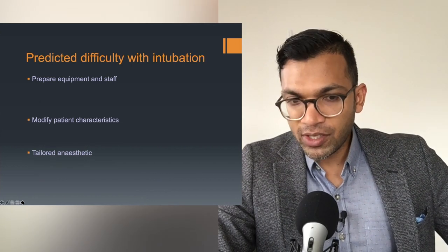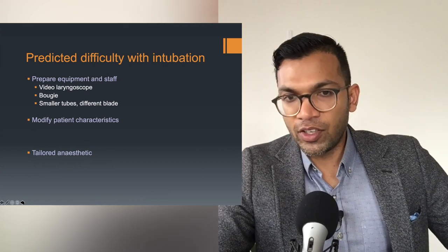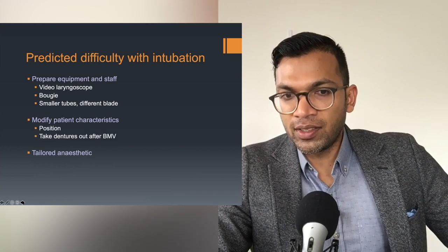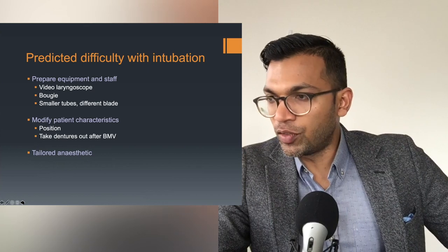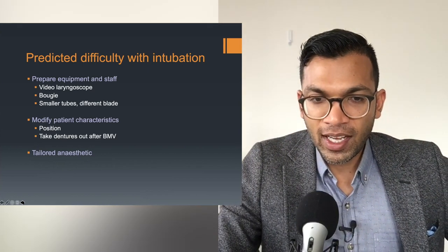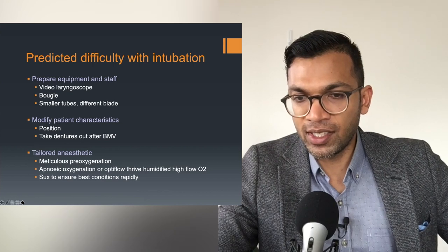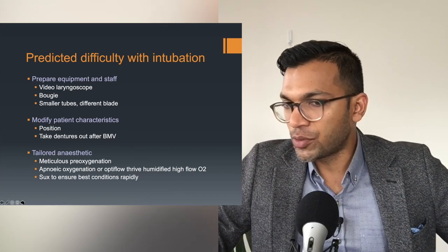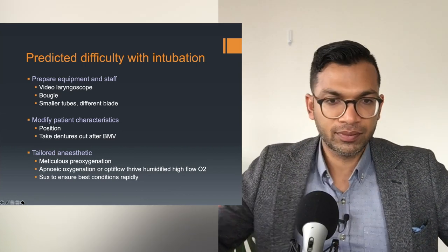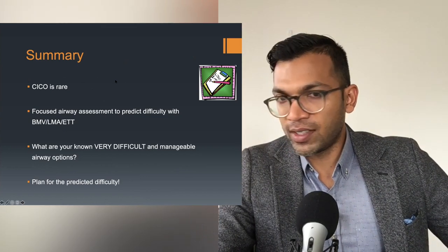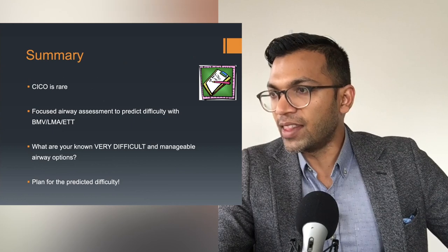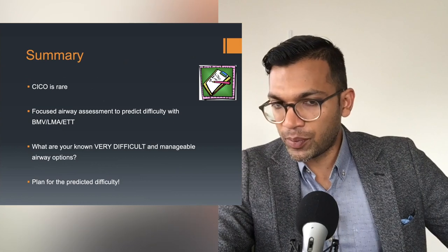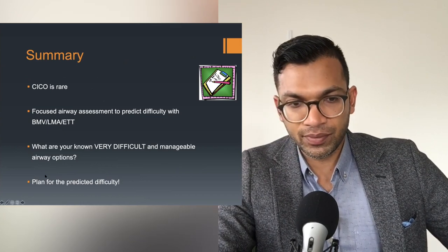For a difficult intubation: get everything ready — videolaryngoscope, bougie, smaller tubes, different blades. Position the patient well and take dentures out, since dentures out is good for intubation but not as good for bag mask. Use meticulous pre-oxygenation, maybe apneic oxygenation with Optiflow THRIVE, and consider suxamethonium or high-dose rocuronium to get the best conditions rapidly. CICO is rare — do a focused airway assessment, know your very difficult options, and plan for predicted difficulty.